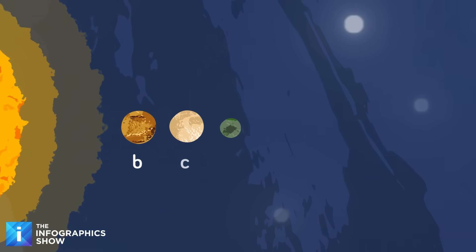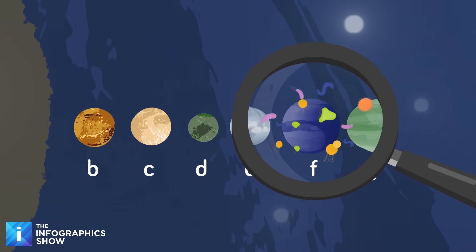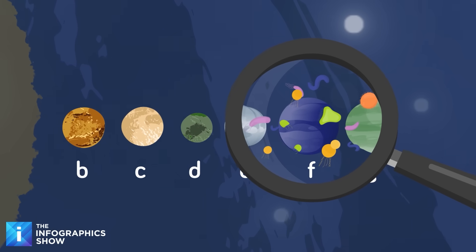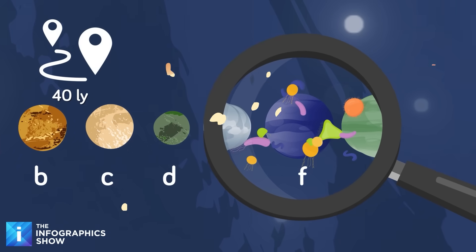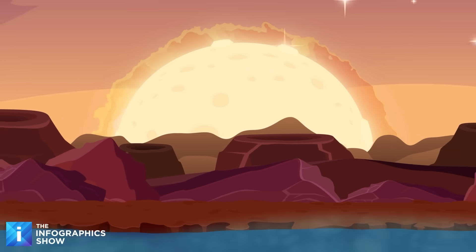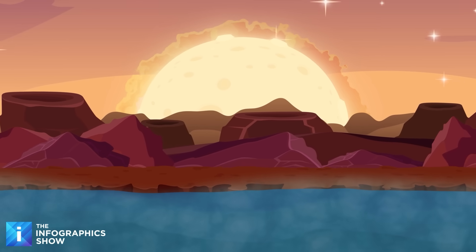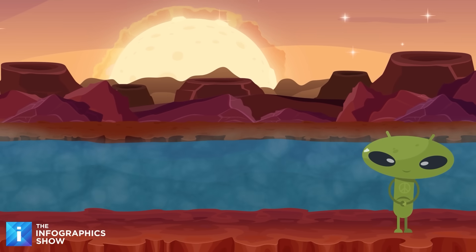Then there's the TRAPPIST-1 system planets E, F, and G, which are all potentially habitable planets. This system has seven Earth-sized planets orbiting an ultra-cool red dwarf star about 40 light-years away. Planets E, F, and G are considered to be in the habitable zone and could potentially host liquid water. However, red dwarf stars are known for their intense flares, which could also pose a challenge to life.